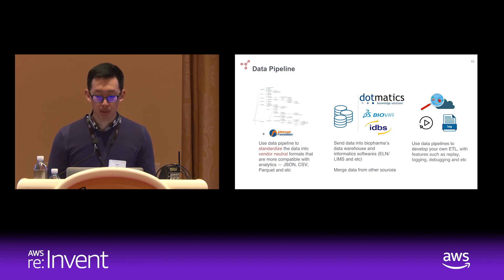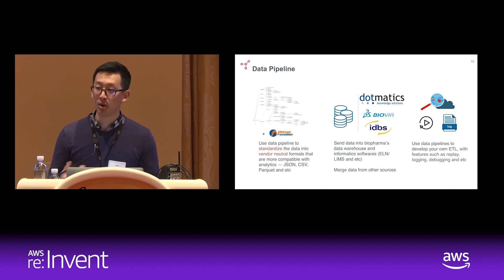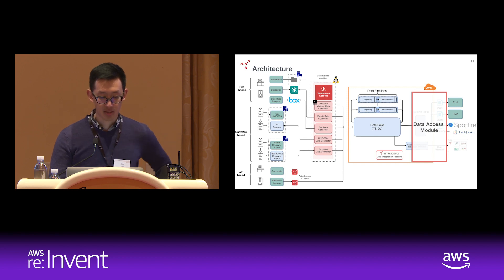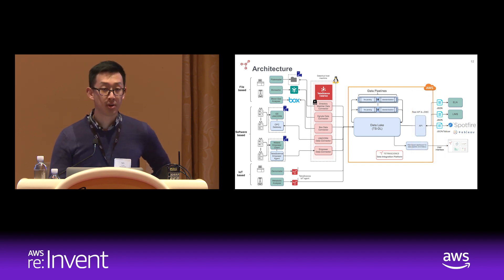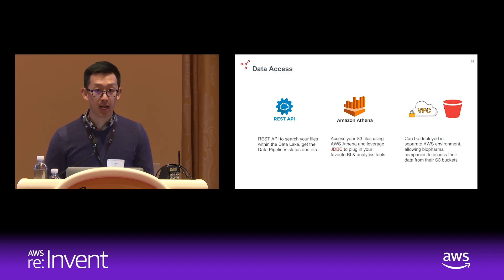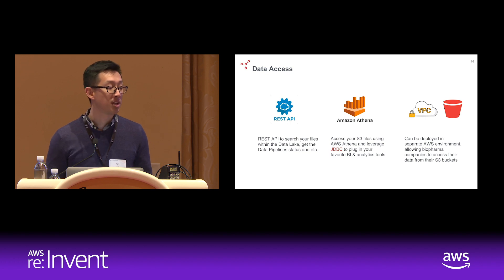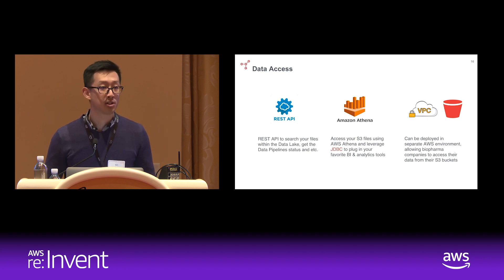Our goal for the data pipelines is to allow biopharma companies to develop their own ETL processes. Features we're considering include allowing you to replay the data pipelines, aggregate all logs from those ETL processes, and debug them in real time so you can add your own data processing scripts. For data access, the data lake has a RESTful API for you to search your data. We're also providing a SQL interface for you to apply BI and analytics tools via the JDBC connector. Our philosophy and vision is that this is your data, so we offer an option to deploy the entire infrastructure within your own Amazon environment — it is your S3 bucket — and because all the data is no longer vendor-proprietary, you can access and trigger further workflows as you want.